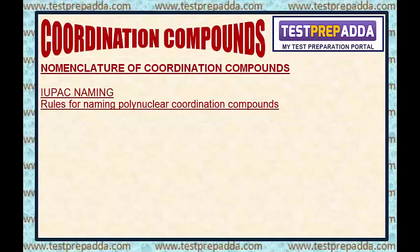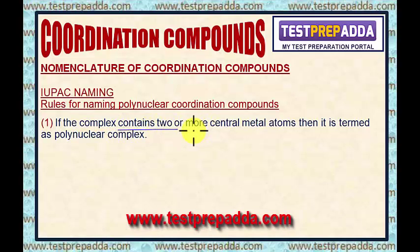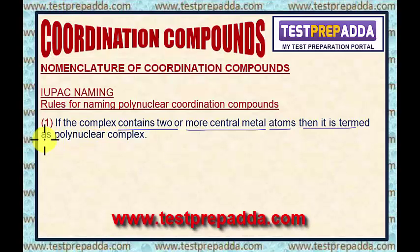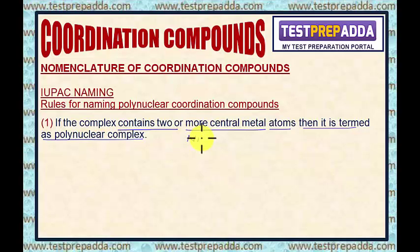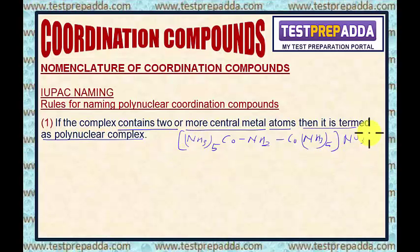What is a Polynuclear Coordination Compound? If the complex contains two or more central metal atoms, then it is termed as a Polynuclear Complex. For example, [(NH3)5Co-NH2-Co(NH3)5] with NO3 outside the bracket. Here you can see one cobalt here and one cobalt here. That is why it is a Polynuclear Coordination Compound.